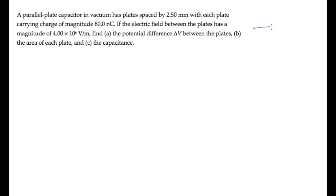This problem gives us a parallel plate capacitor in vacuum with plates separated by a distance d of 2.5 mm. Each plate carries charge of magnitude q. I'll draw the positive plate on the top and the negative plate on the bottom, which means the constant electric field between them would be directed down like this.